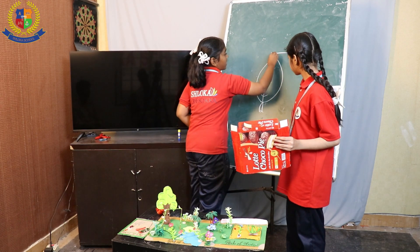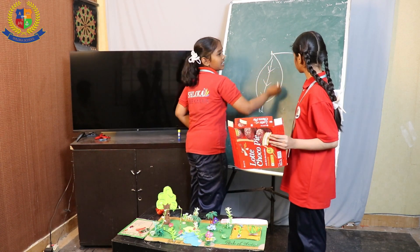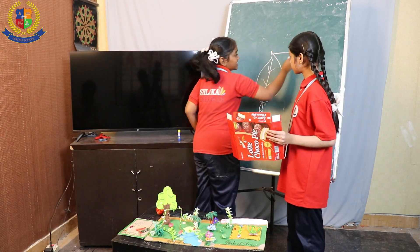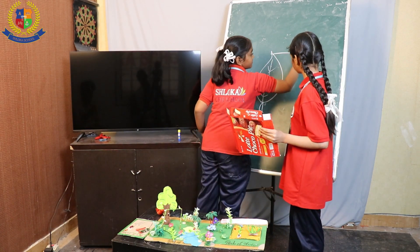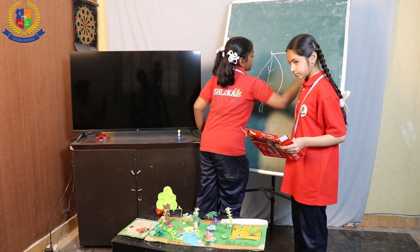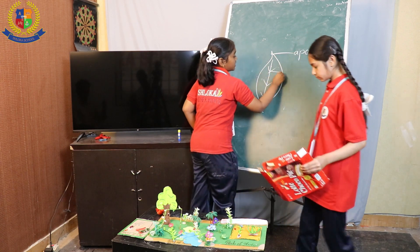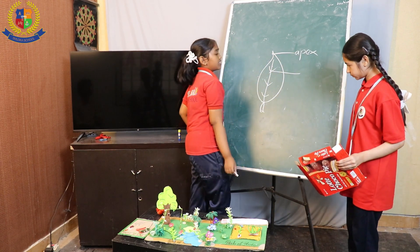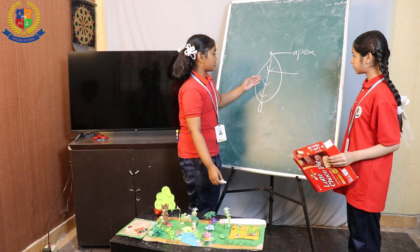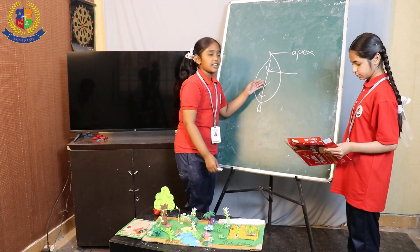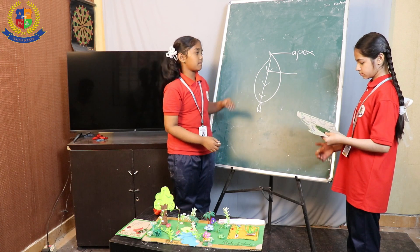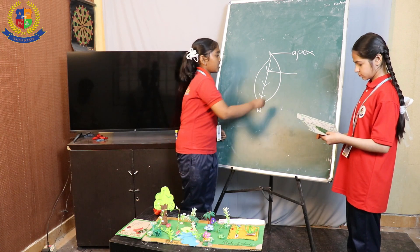This upper part is called the apex. And the veins are also of two types: reticulate venation and parallel venation.